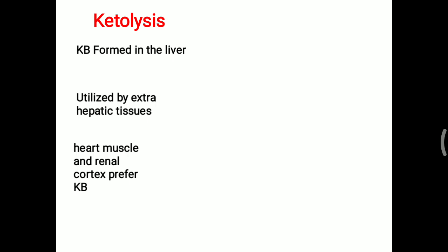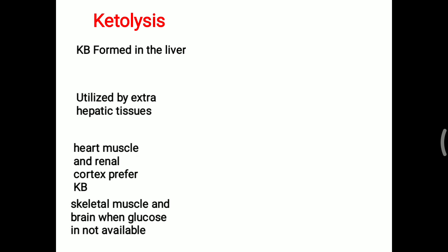Heart muscle and renal cortex prefer ketone bodies for fuel, while skeletal muscle and brain utilize ketone bodies when glucose is not available. Brain, heart, and skeletal muscle are predominantly dependent on ketone bodies.